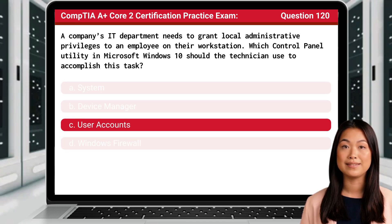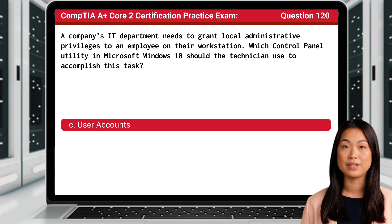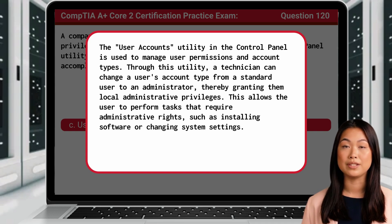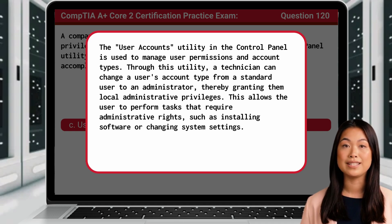The answer is C: User Accounts. The User Accounts utility in the control panel is used to manage user permissions and account types. Through this utility, a technician can change a user's account type from a standard user to an administrator, thereby granting them local administrative privileges. This allows the user to perform tasks that require administrative rights, such as installing software or changing system settings.